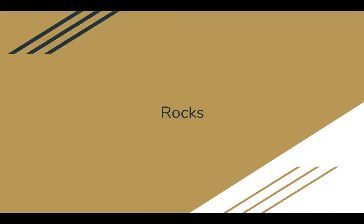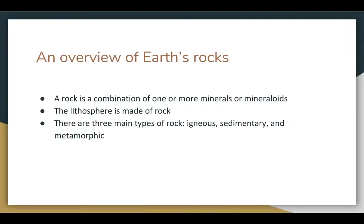That brings me to rocks — an overview of the Earth's rocks and what rocks are. A rock is a combination of one or more minerals or mineraloids. As mentioned before, the lithosphere is made up of rock, and so is the crust. There are three main types of rock I'm going to be talking about: igneous rock, sedimentary rock, and metamorphic rock.